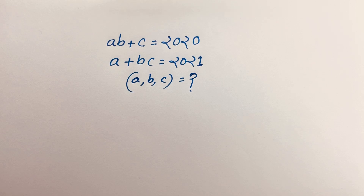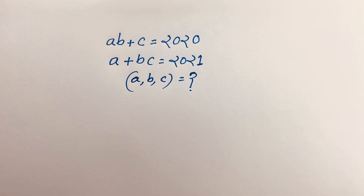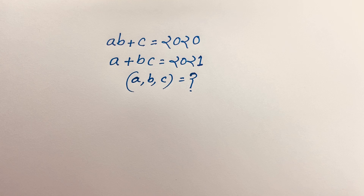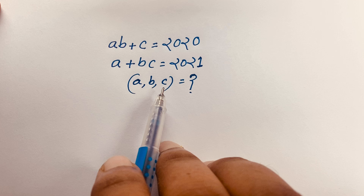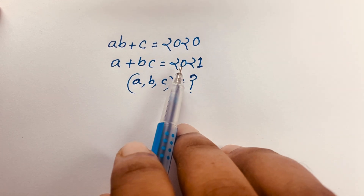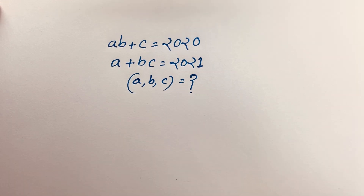Hello everyone. In this video we'll solve this interesting Math Olympiad question: ab + c = 2020, a + bc = 2021. What is abc? We'll find the integer solution. Here we have three variables a, b, c, and the values 2020 and 2021.